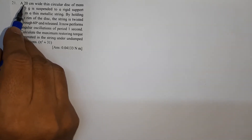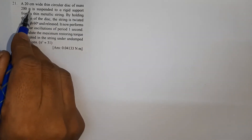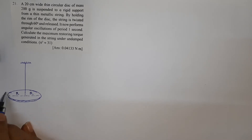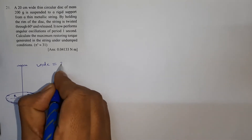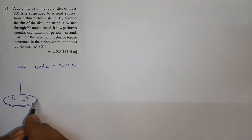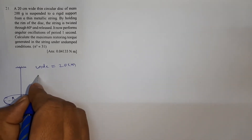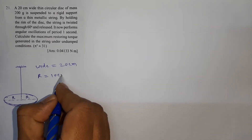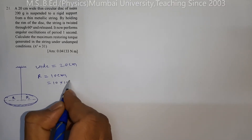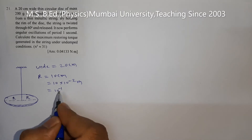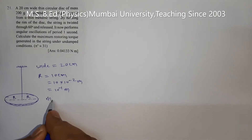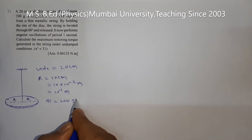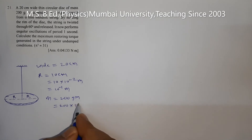Problem 21: A 20 centimeter wide thin circular disc of mass 200 gram. The width is 20 centimeter, so radius equals half of that — 10 centimeter, which is 10 × 10⁻² meter, or 10⁻¹ meter. Mass is 200 gram, converting gram to kilogram gives 200 × 10⁻³ kg, which equals 2 × 10⁻¹ kg.